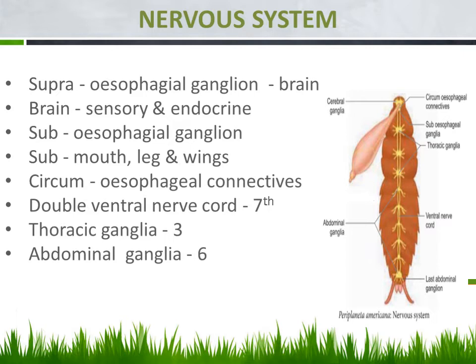We noted the same structure in the earthworm as the circumpharyngeal connectives, connecting the suprapharyngeal ganglion and the subpharyngeal ganglion. This is the main region referred to as the brain nerves.